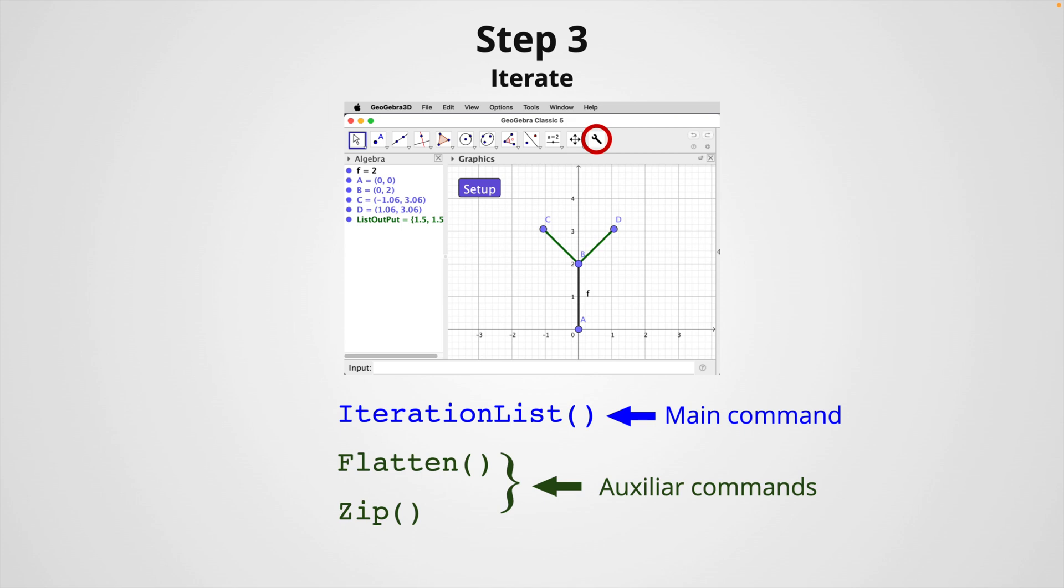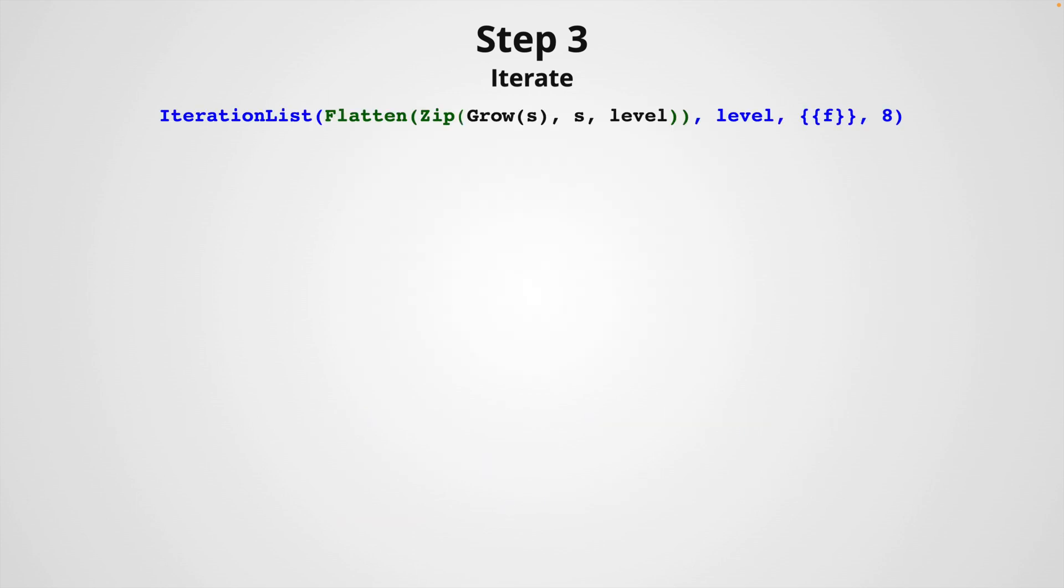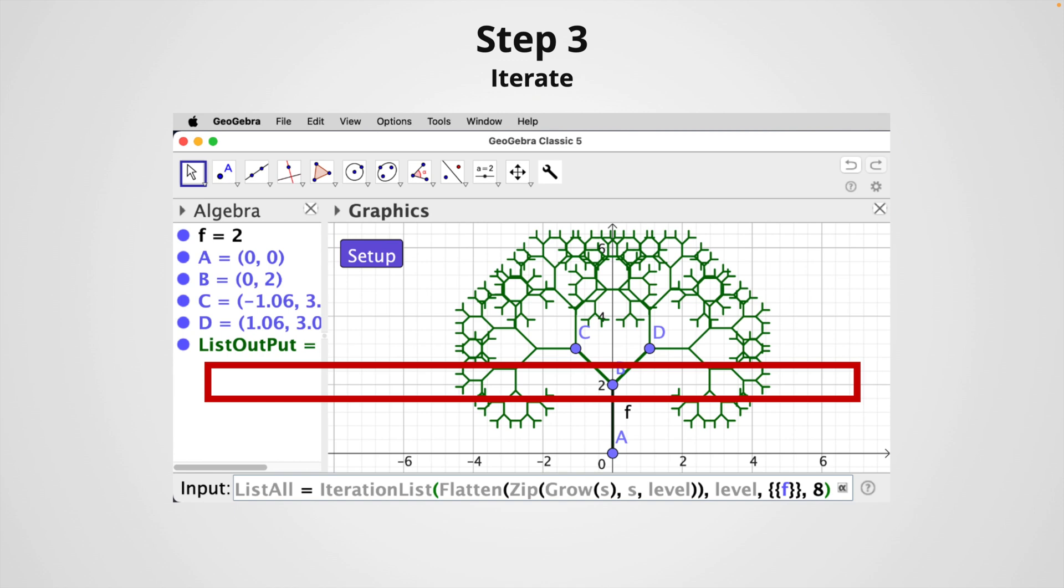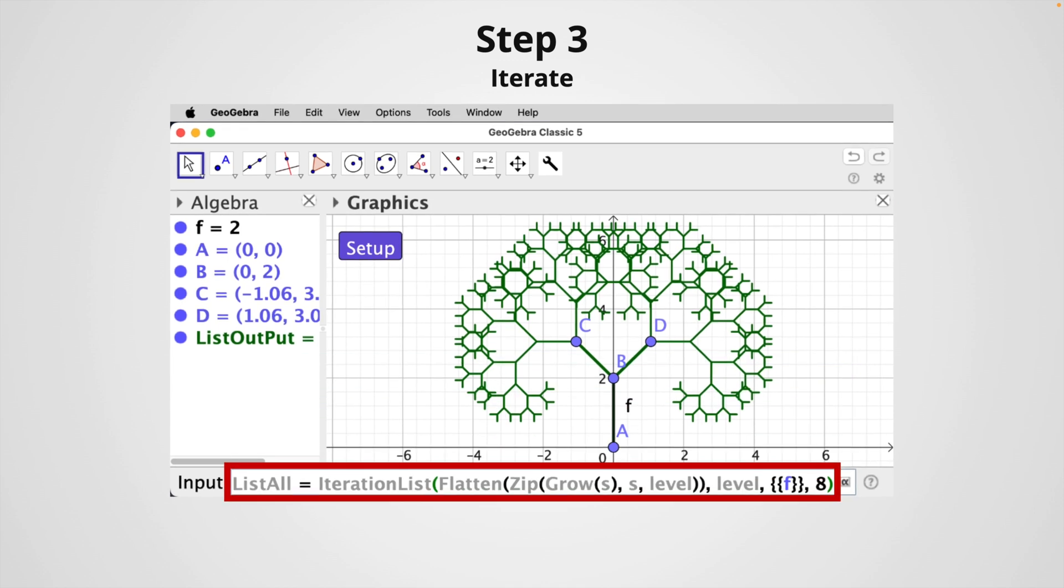The first command, the iteration list is going to be our main command, and the other two are going to be auxiliary commands. So the full instruction that includes our personalized tool named Grow is here. We type this code in the input box in GeoGebra and hit enter to obtain our fractal tree.